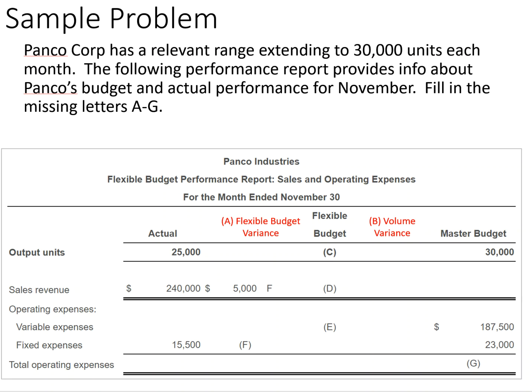For output units, we have actual of 25,000 units, the flexible budget is unknown, and the master budget is 30,000. The flexible budget is always at the same level as actual, so that will also be 25,000 units.